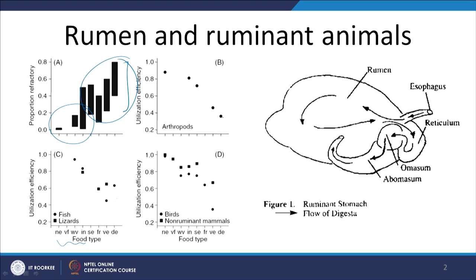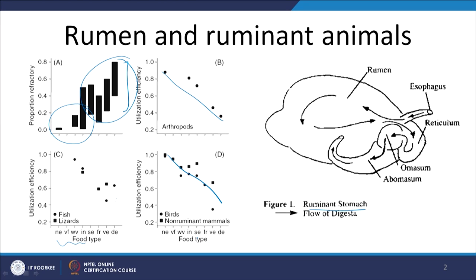Similarly, for arthropods we notice a quite linear decrease as the portion of refractory or difficult-to-digest food increases. Again, in birds and mammals that are non-ruminant like ourselves, high fiber food or food that is hard to digest will reduce the efficiency of digestion. This is where the stomach of ruminant living beings such as cows and rabbits really helps them digest food better, especially when it has a high proportion of refractory materials.